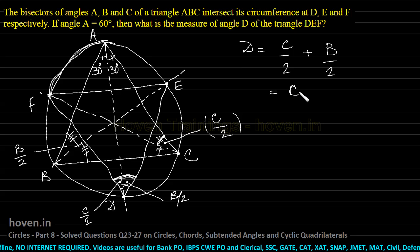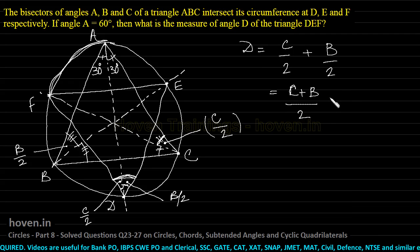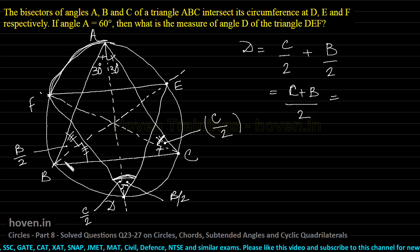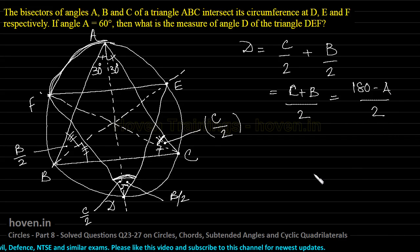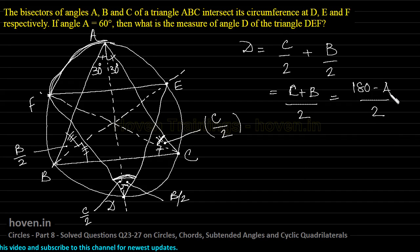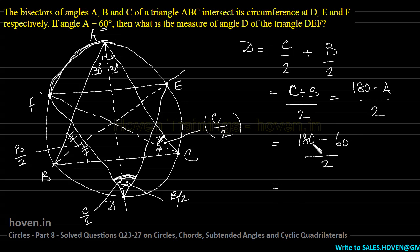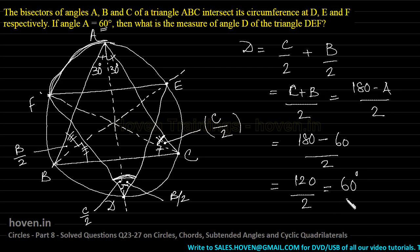We can write angle D equal to (B + C)/2. For triangle ABC, the sum of angles is 180°, so B + C = 180° − A. Therefore angle D = (180° − 60°)/2 = 120/2 = 60 degrees, which is the answer.